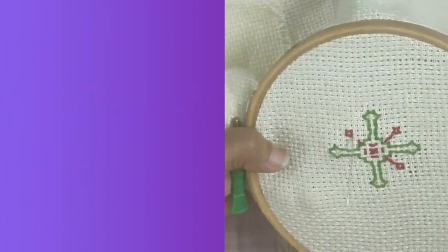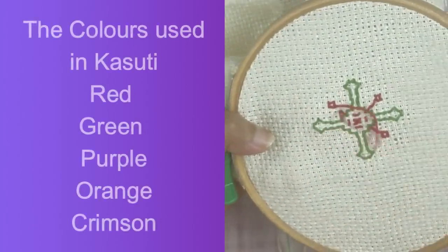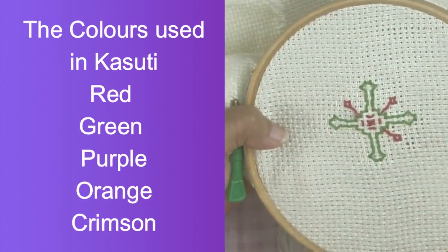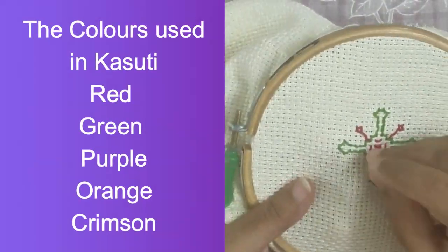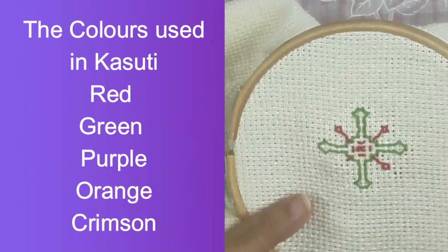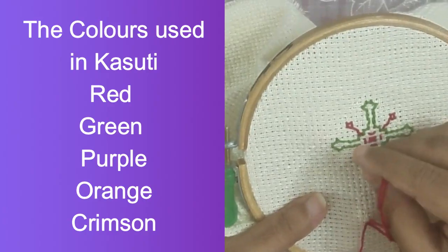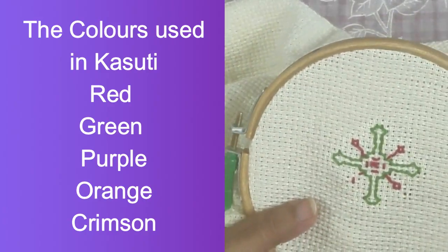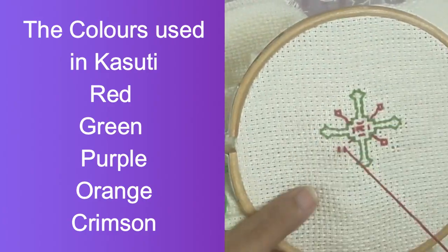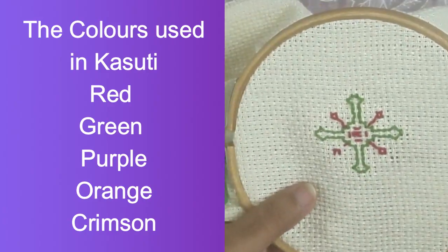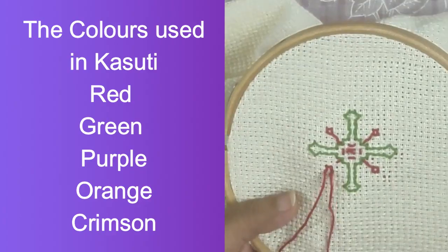The colors used in Kasuti are red, green, purple, orange, and crimson. The brighter shades of these colors are typically chosen.